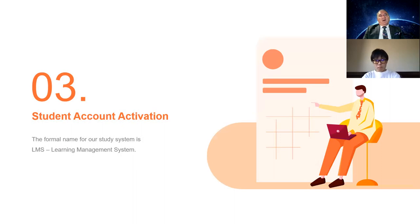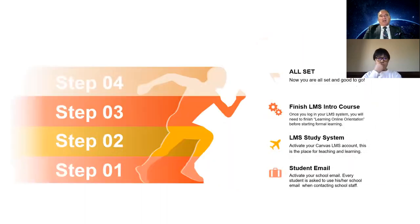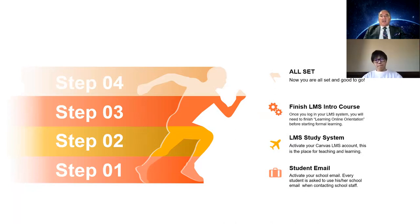A big part of our operations at Concordia involves student account activation. Our learning management system is called LMS, and we use Canvas at Concordia. To get activated: first, students receive a school email, which should be used when contacting school staff. Then we activate your Canvas account, which is critical for teaching and learning — students must understand how the LMS works to access information and upload assignments, tests, and quizzes.